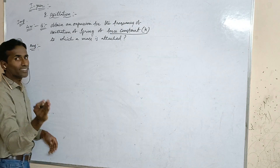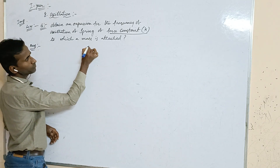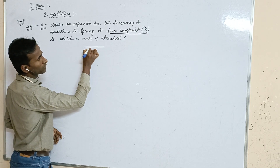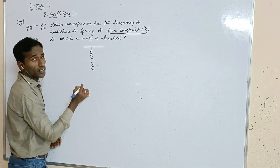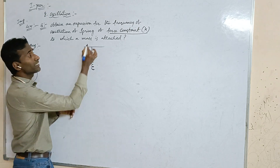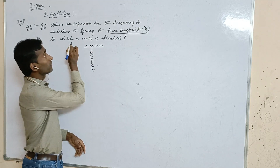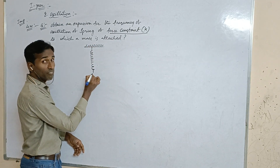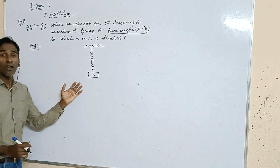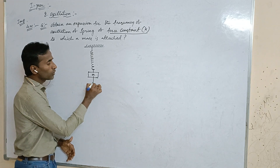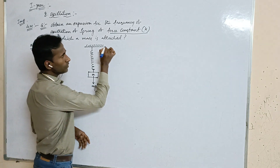Let us consider a spring attached at a rigid support. The given mass m is attached at the free end of the spring. Whenever we attach the weight of the body, it acts in the downward direction — that is, mg downward.